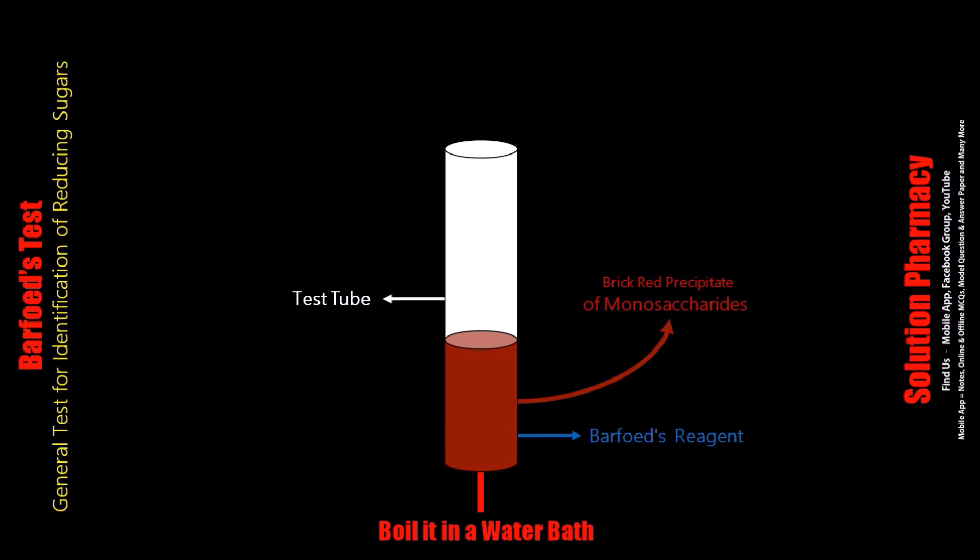Disaccharides also give red color precipitate but on prolonged heating. Formation of red color precipitate after prolonged heating indicates the presence of disaccharides because disaccharides are weaker reducing agents. If no red color precipitate forms after 2 minutes of boiling, it indicates the presence of reducing disaccharides.